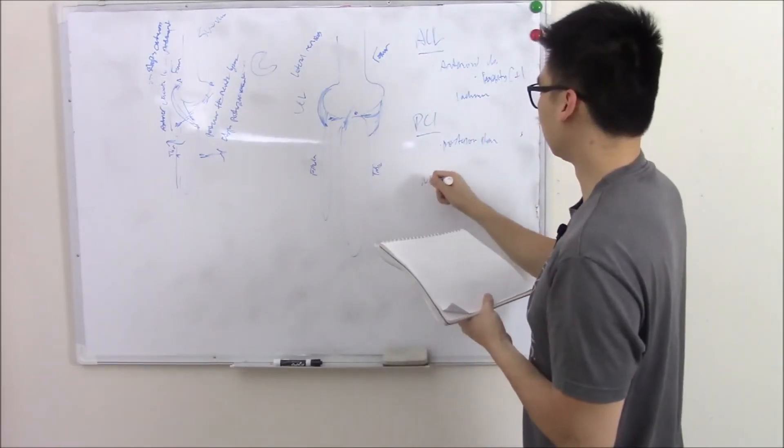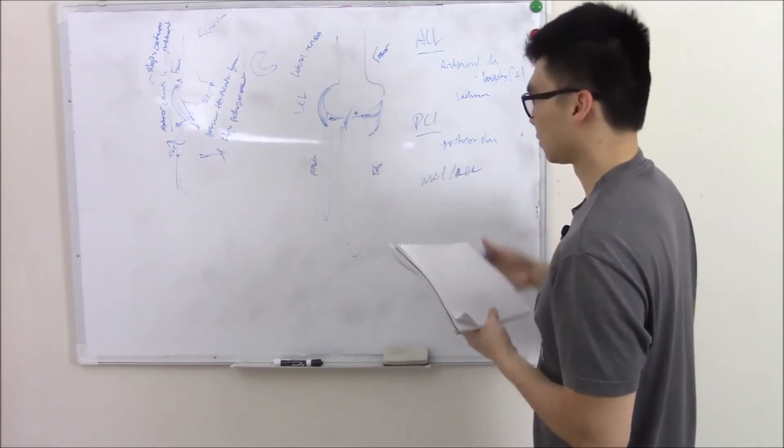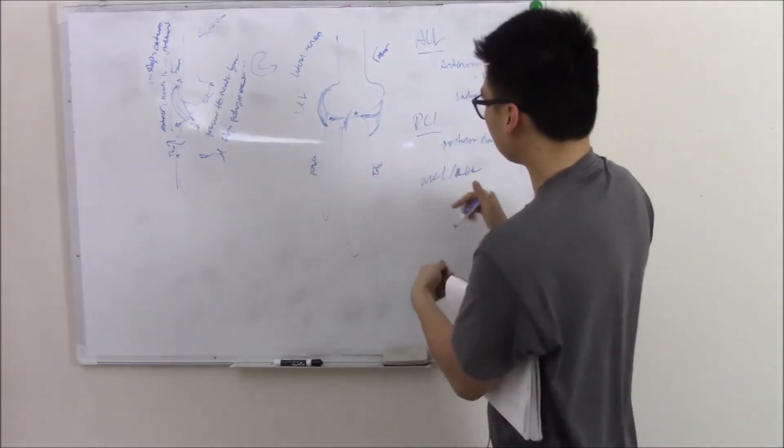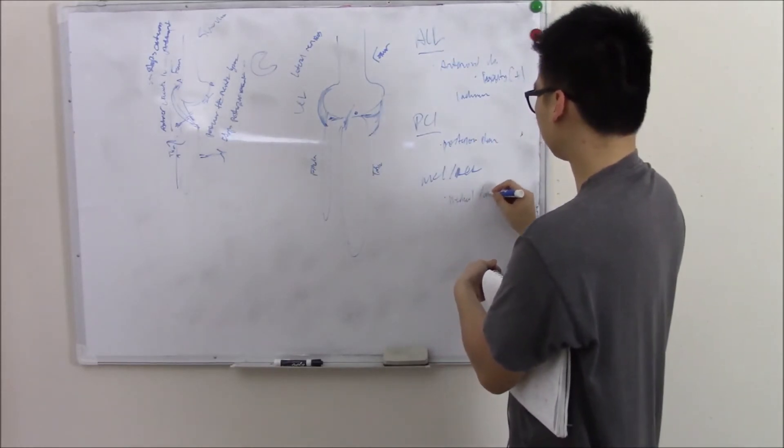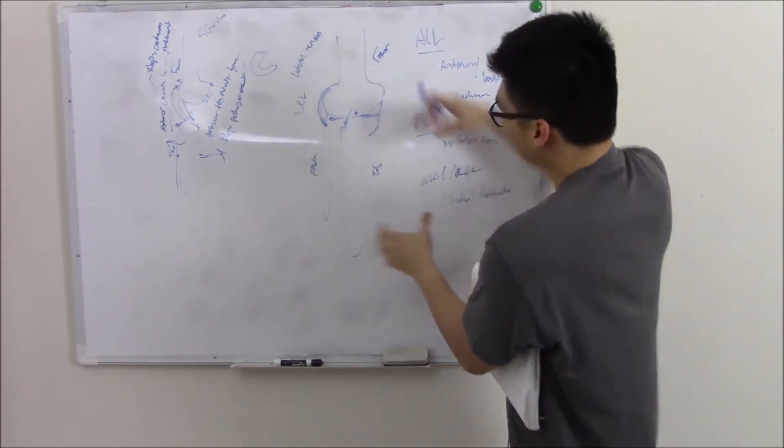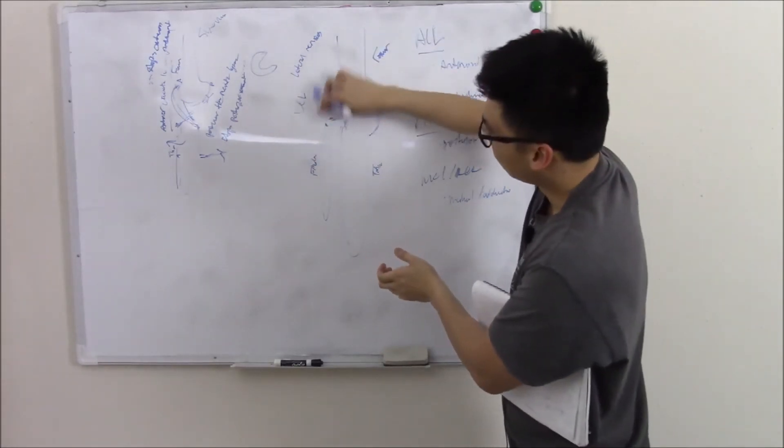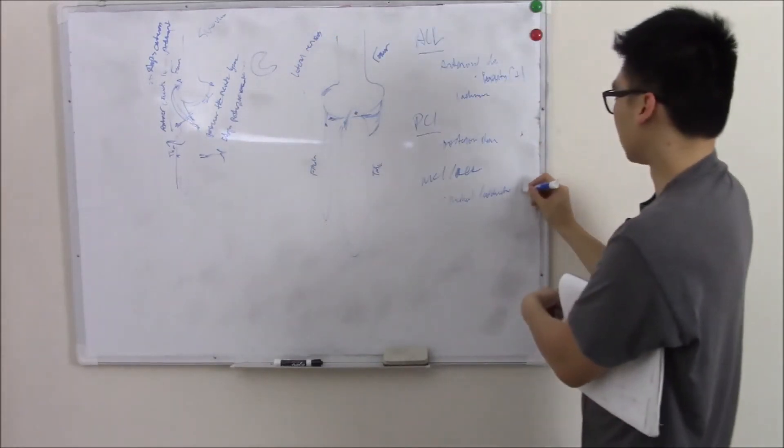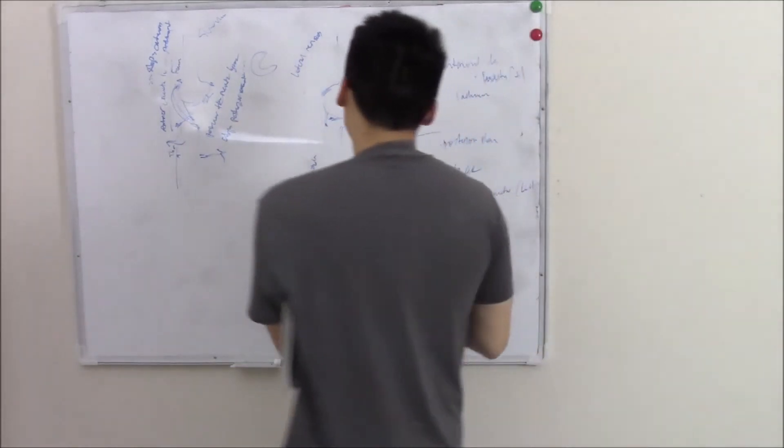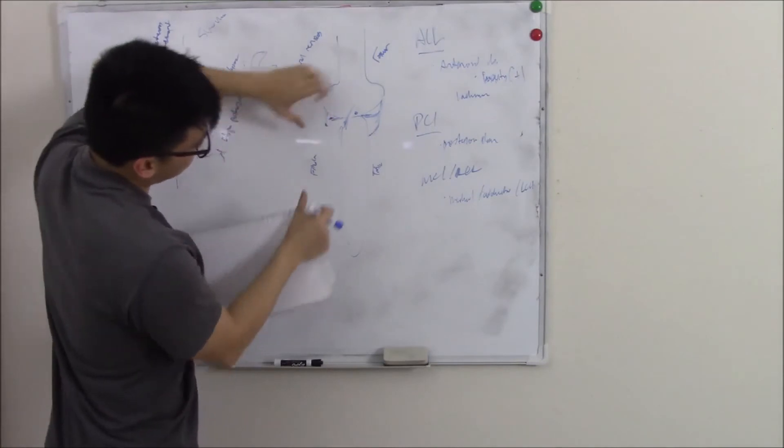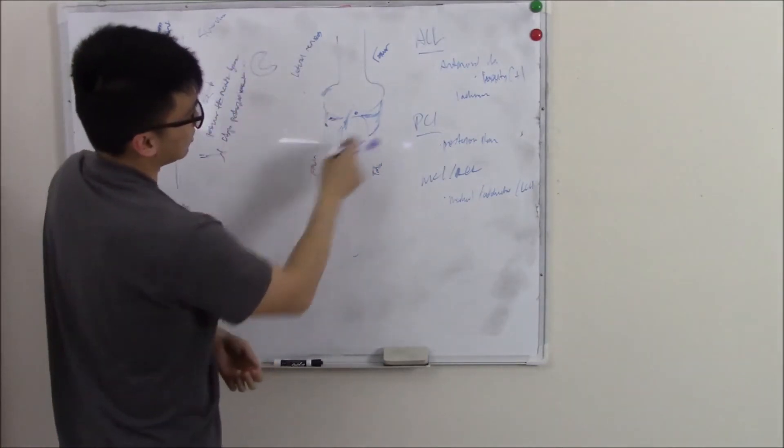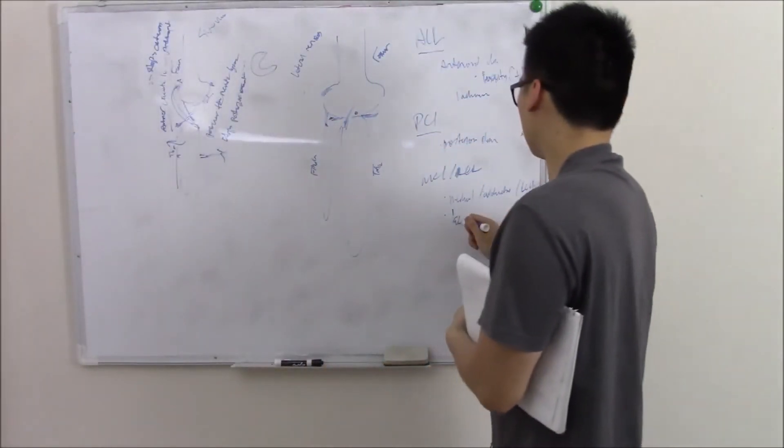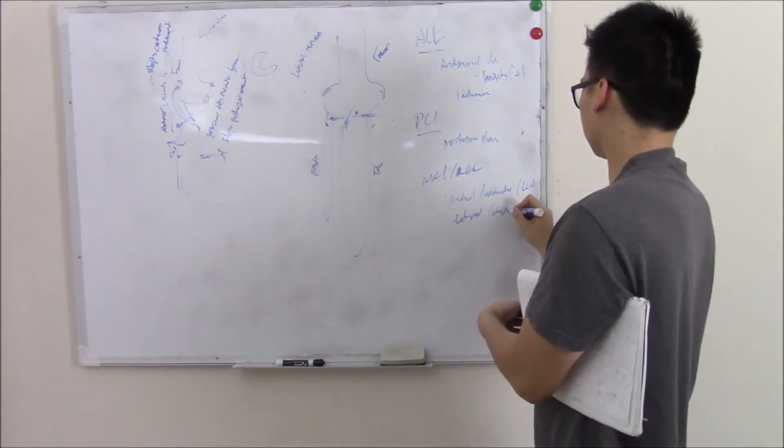If you suspect the MCL and LCL, all you have to do is apply force. If you're applying medial adductive force, it shouldn't budge much if your LCL is there. But if it's not there, it'll just open right up. So that test is your LCL. If you're applying lateral abductive force, it shouldn't open much unless your MCL is torn. If it is torn, it'll open right up. That's your MCL.